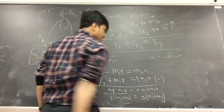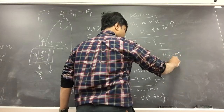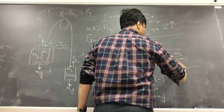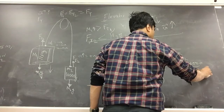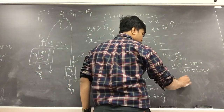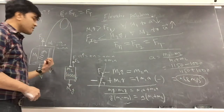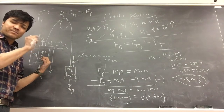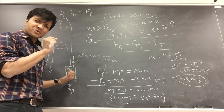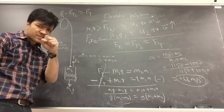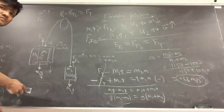Substituting the values: a equals (m1 minus m2) times g divided by (m1 plus m2), which is (1150 minus 1000) divided by (1150 plus 1000). The result is 0.68 meters per second squared. So m1 accelerates downward at 0.68 m/s² and m2 accelerates upward at 0.68 m/s².